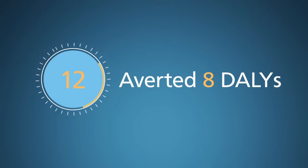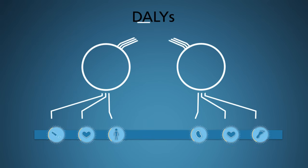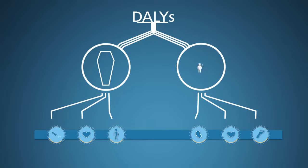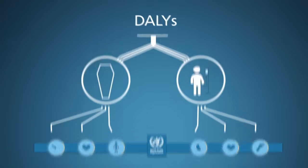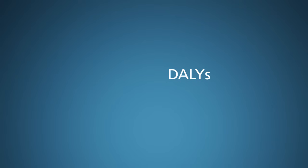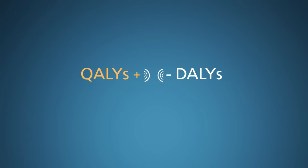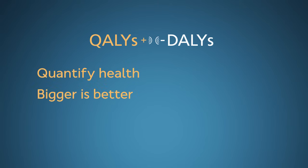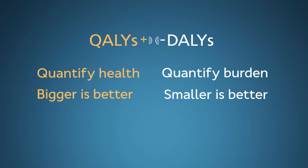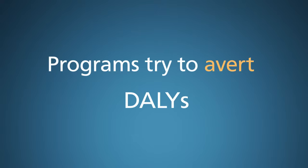DALYs were invented 30 years ago to combine separate data on disease mortality and morbidity being recorded by the World Health Organization. They complement another common metric already in use at the time, known as QALYs, or quality-adjusted life years. DALYs and QALYs both incorporate disease-related reductions in length of life and the negative effects of morbidity, but they consider the matter from opposite perspectives. QALYs quantify health, so bigger values are better, while DALYs quantify disease burden, and thus smaller DALY values are better. Health programs try to avert DALYs. Other than their opposite sign, DALYs and QALYs are almost equivalent.